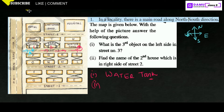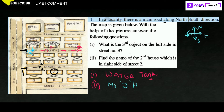Our second question: find the name of the second house which is on the right side of street 2. Going in this direction, that is the direction of street 2. What they are asking — the second house on the right side. This is right side, this is left side. Right side: first and second. What is that? It is Mr. J house.